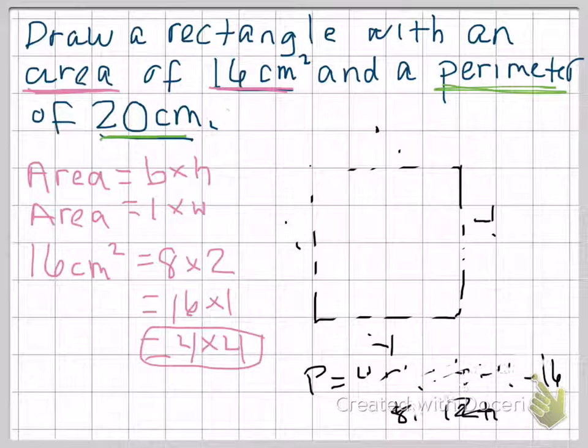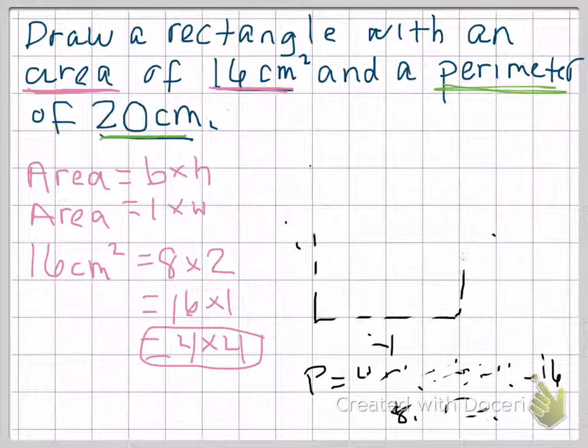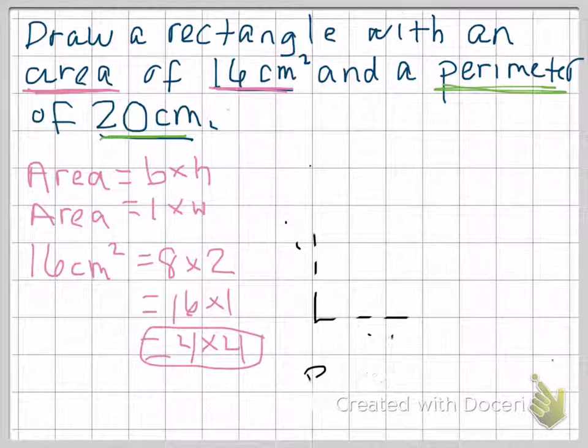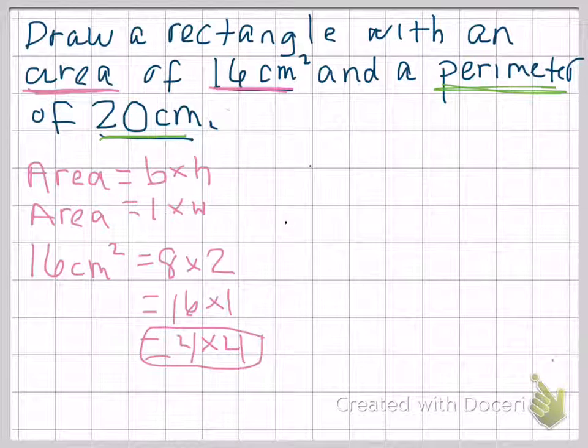So let's go ahead and get rid of that. That means we're going to have to try another one. I'm going to actually make my eraser a little bit bigger so this goes by faster. Here we go. Don't we love technology? Okay, so let's try another one. So far we figured out that this one is not going to work, and that's okay. Let's try the 8 by 2.